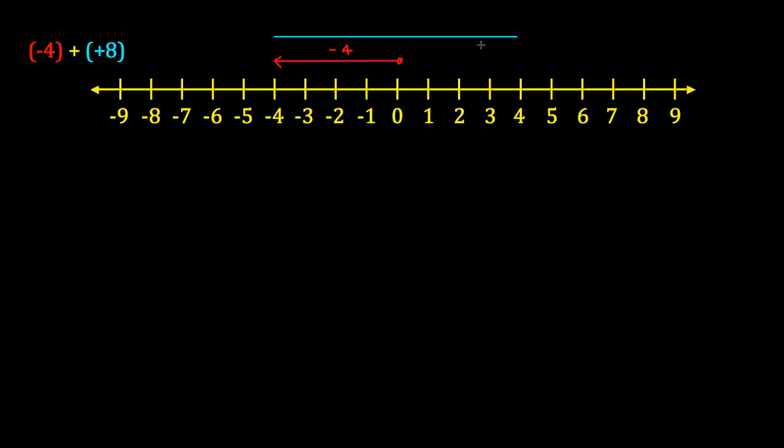So I draw my arrow to be eight units long, and it's pointed to the right. So now it looks like this, and that will represent our positive eight.